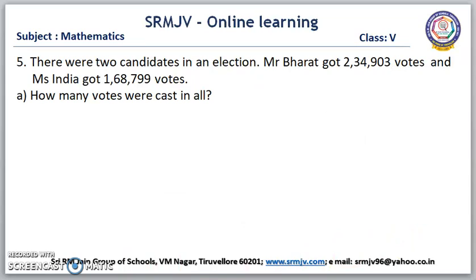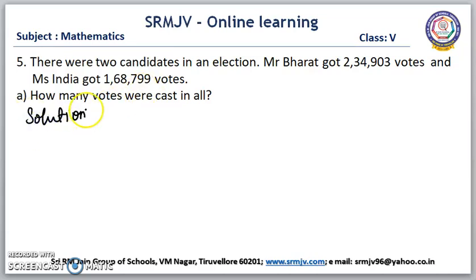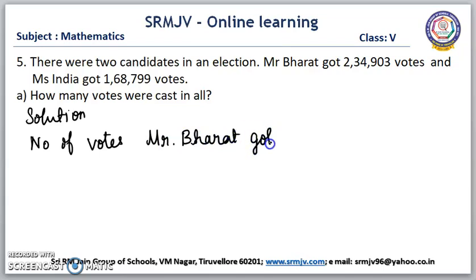The next question is: there were two candidates in an election. Mr. Bharat got 2,34,903 votes and Miss India got 1,68,799 votes. How many votes were cast in all? This is the number of votes Mr. Bharat got. This is the number of votes Miss India got. We have to add these two. Solution. Number of votes Mr. Bharat got is equal to 2,34,903 votes. We have to write the place values: ones, tens, hundreds, thousands, ten thousands, lakhs.